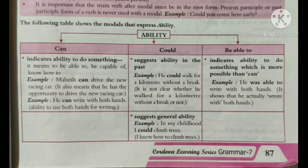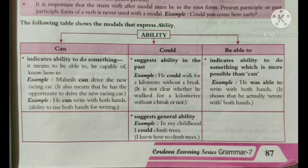The word 'could' is used to suggest ability in the past. For example: 'He could walk for a kilometer without a break.' Here it is not certain whether he actually walked or not — it suggests he had that ability. It also suggests general ability in the past: 'In my childhood, I could climb trees.' That gives us some idea about the past.